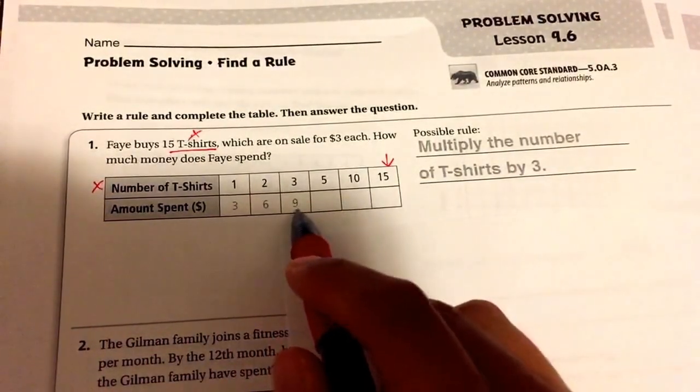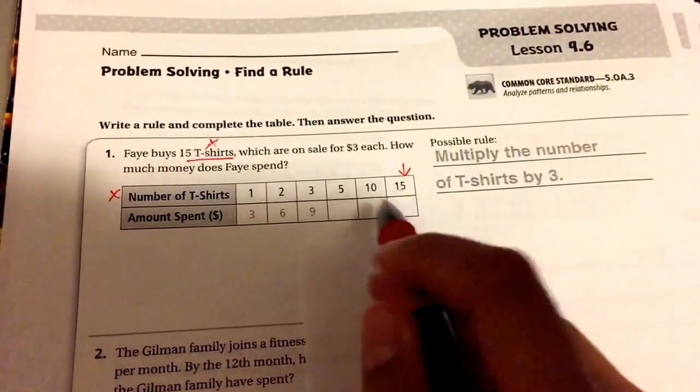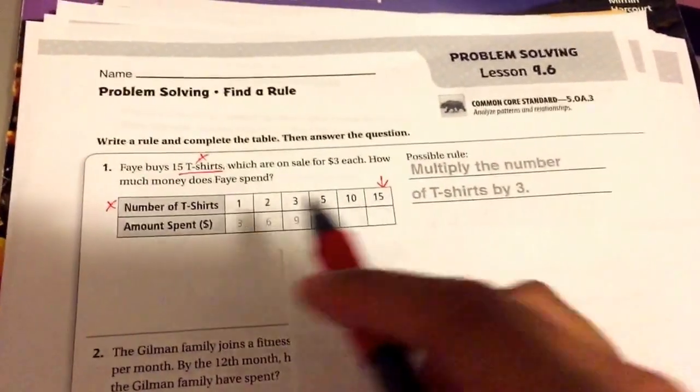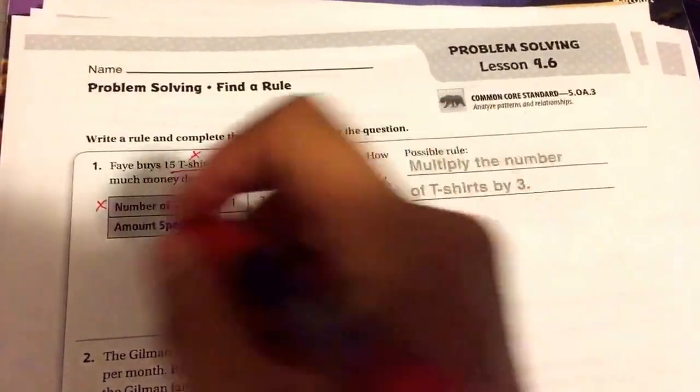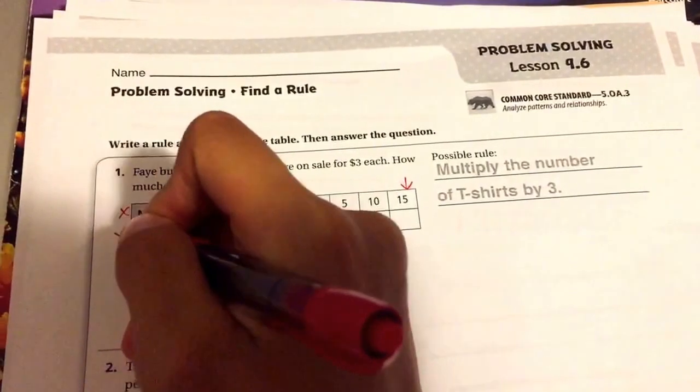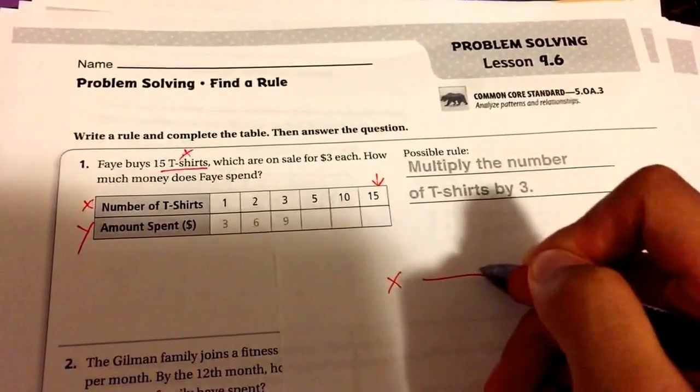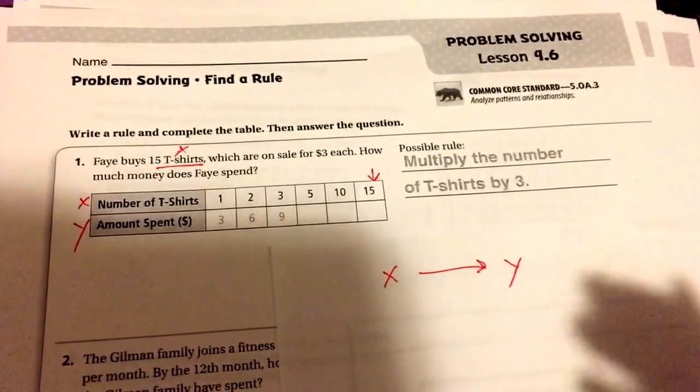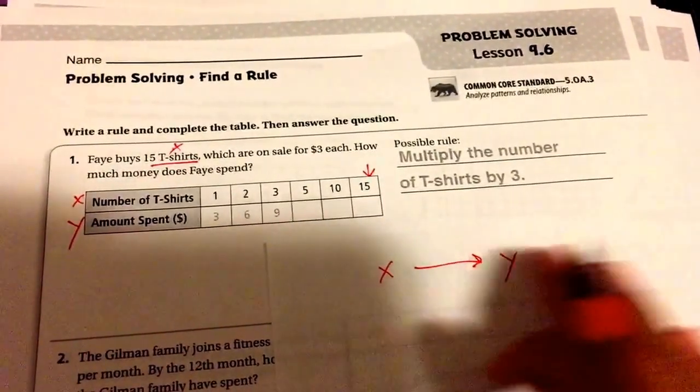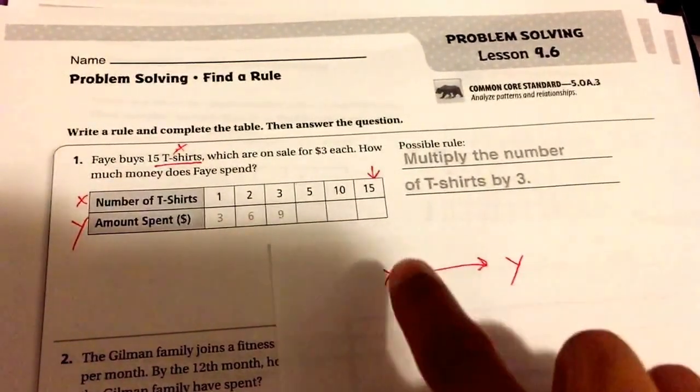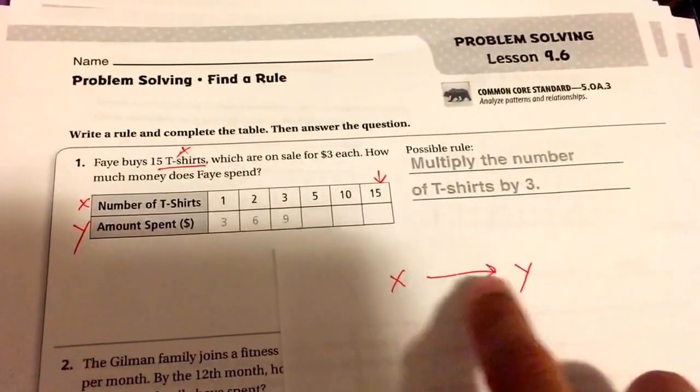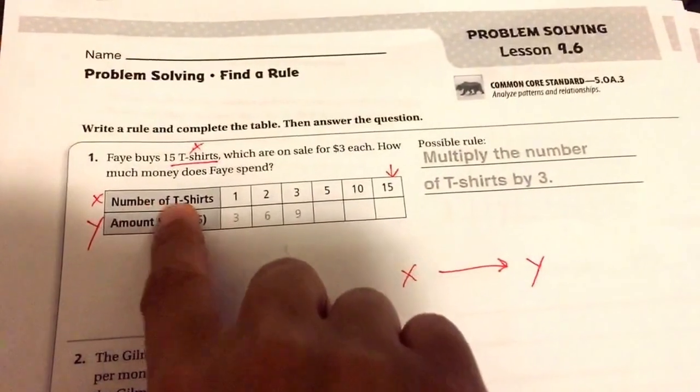What they did was they started a simple pattern. One shirt is three dollars, two shirts is six dollars, three shirts is nine dollars. From there, what would our pattern be so we could find 15? Our Y is the cost, the amount spent. So we have our X and our Y, and it's very imperative—it's very important—that we map this out with labels. So this is our X going to our Y. Our X is our number of t-shirts.